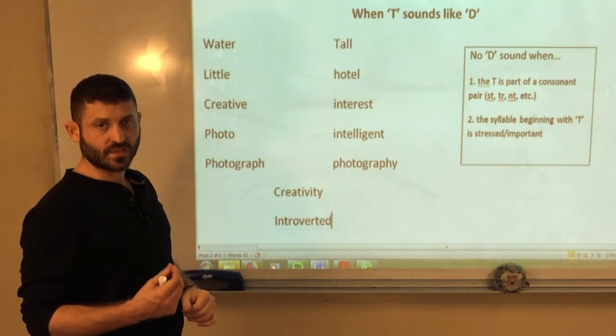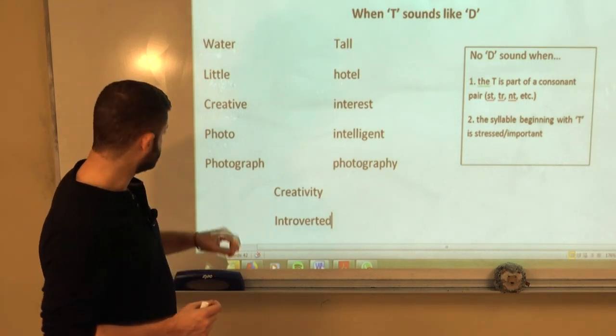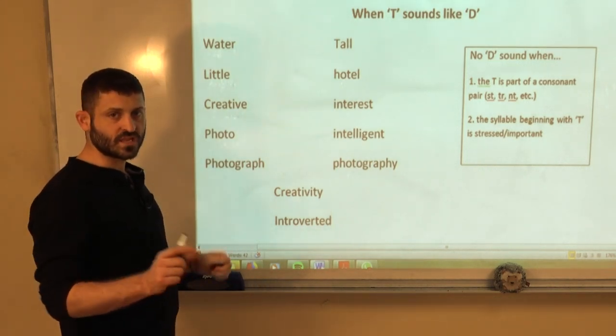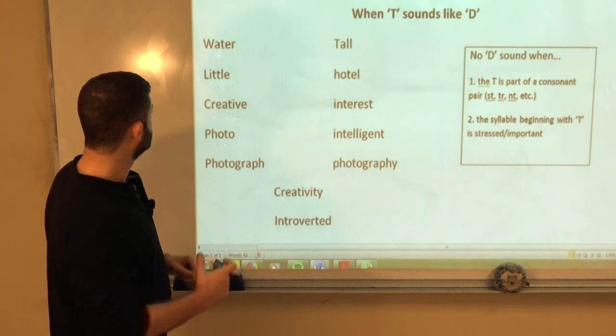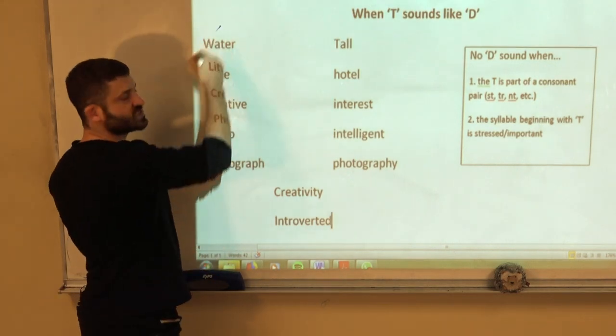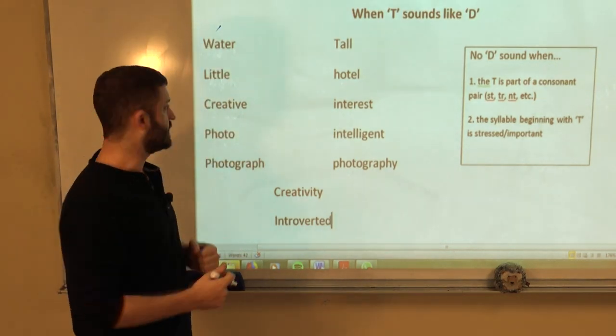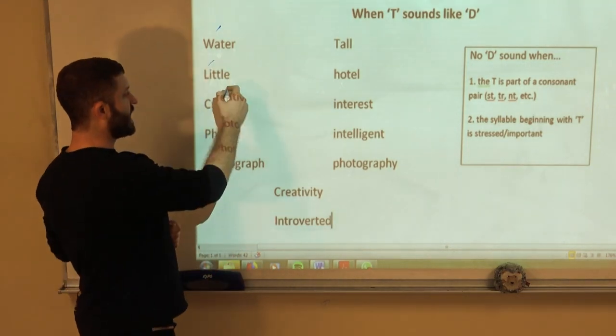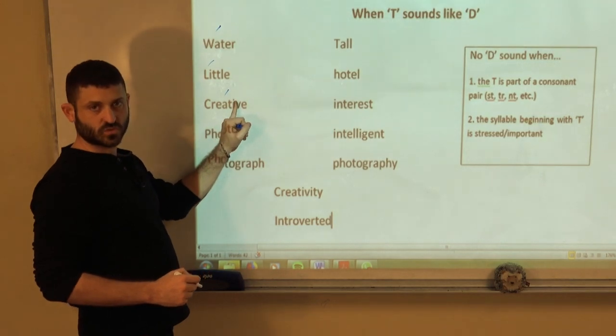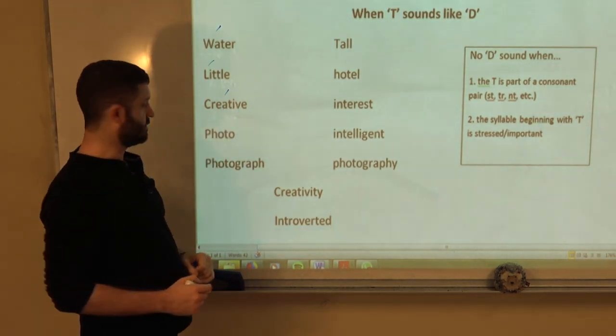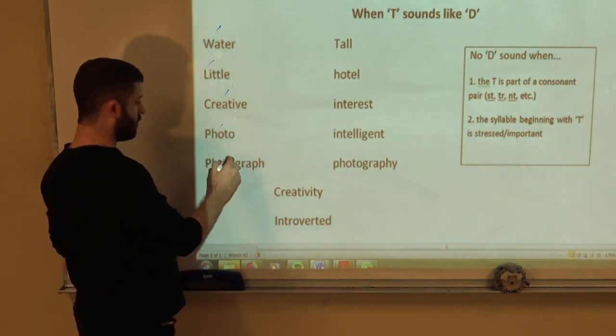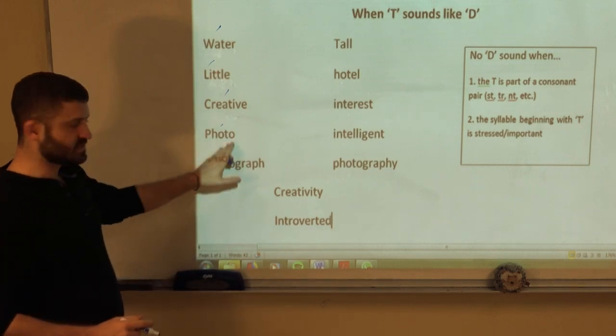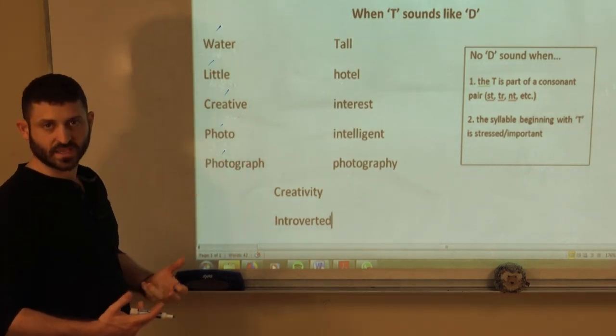Now, the other thing that must be present is the stress on the word cannot be the T syllable. So, water. The stress is before the T. So, we would make it a D. Little. Stress. Again, before the T. Make it a D. Creative. This is not stressed. So, we make it a D. And then, photo and photograph. The stress is not the T syllable. So, we can make it a D.